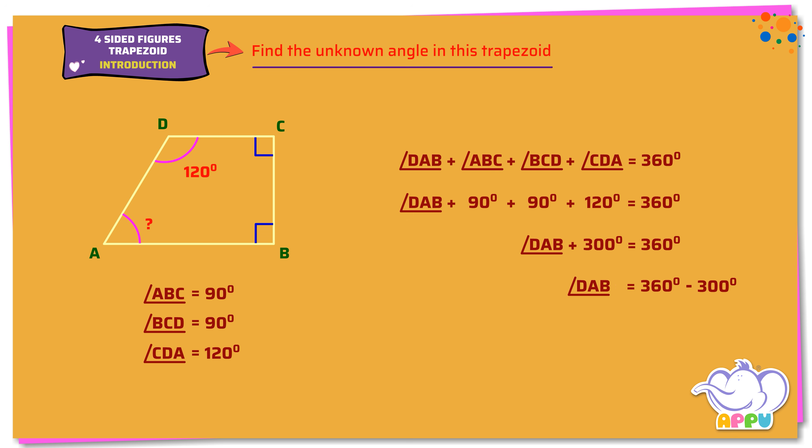Angle DAB equals 360 degrees minus 300. Angle DAB equals 60 degrees.